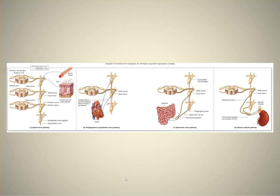Slide 11 shows these different sympathetic routes in figure form. For the spinal nerve pathway, the preganglionic axon exits the spinal cord into what's called the white ramus of the ramus communicans, into a sympathetic chain ganglion. The postganglionic fibers then leave the same sympathetic chain ganglion and go out to the skin or the target effector.